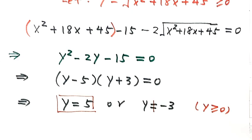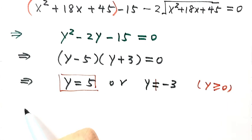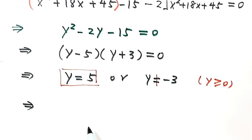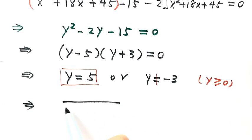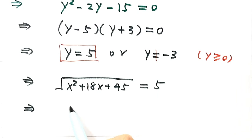So now let's use this. Replace y with the square root. Then the square root of x squared plus 18x plus 45 equals 5. Square both sides, then we get 25.